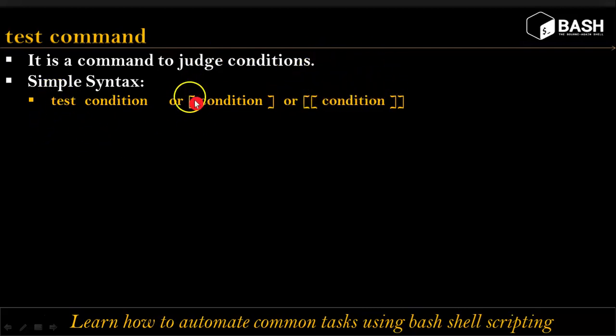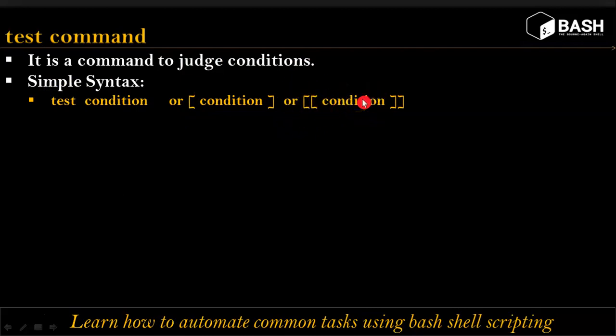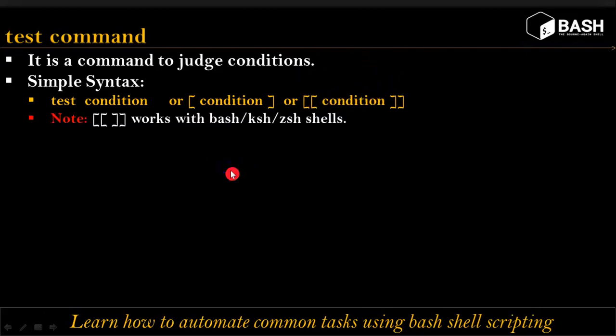Compared to test or single square brace, double square braces are the enhanced version to validate your condition. This syntax works with bash, ksh, and zsh. If you want to validate your condition in tcsh, sh, or csh, then use 'test condition' or single square braces.